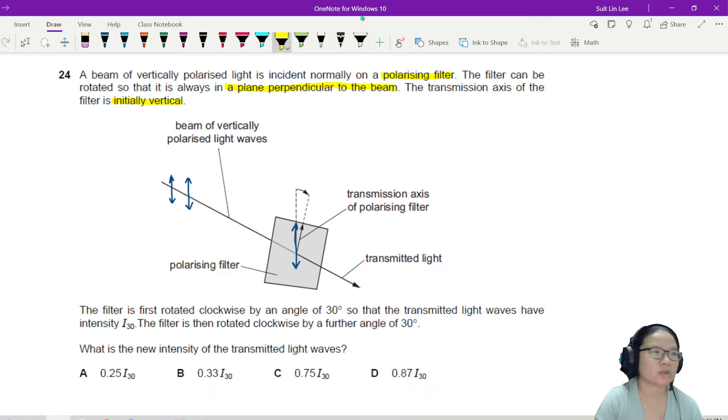The filter is first rotated clockwise by an angle of 30 degrees so that the transmitted light waves have the intensity of I-30. And then we rotate clockwise by another 30 degrees. What is the new intensity of the transmitted light?